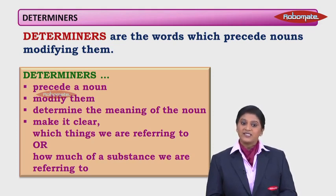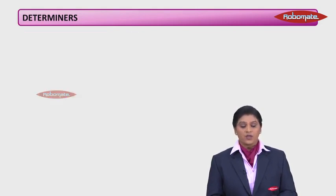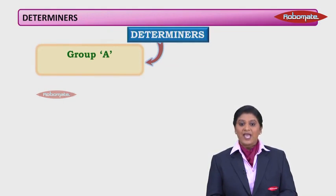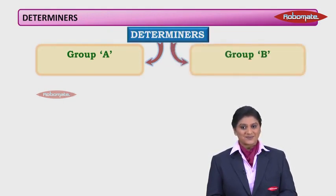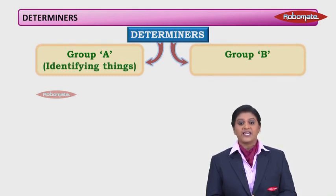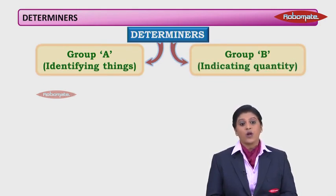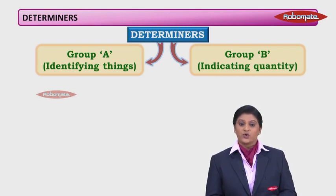Now, let us have a look at all the determiners and how they can fall into two groups. We can broadly divide all the determiners into group A and group B. Group A determiners help us in identifying things, whereas group B determiners indicate quantity.